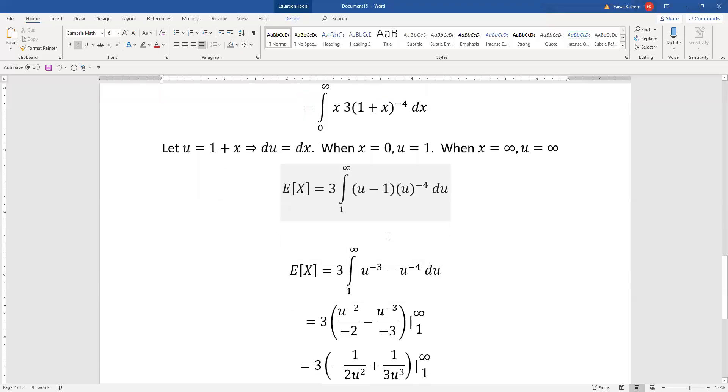So now you see that the advantage is we can distribute this u^(-4) on this (u - 1). So you get u^(-3) minus u^(-4).